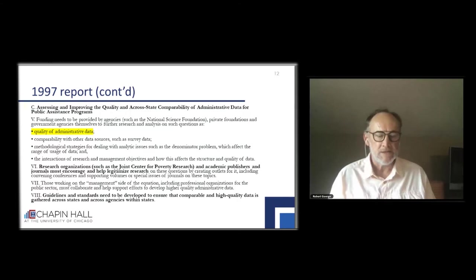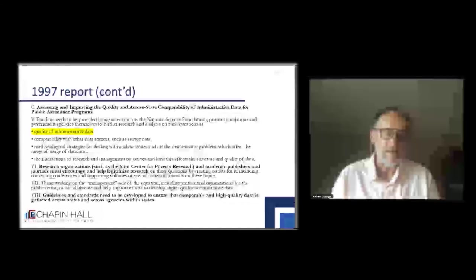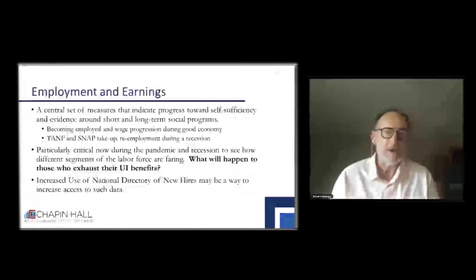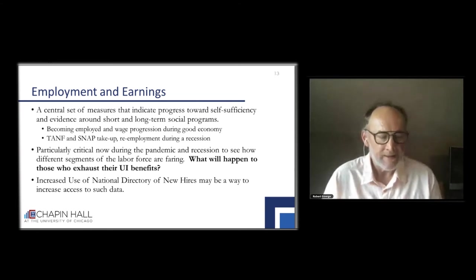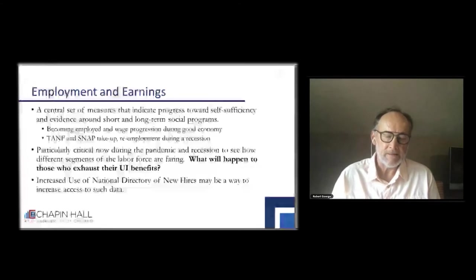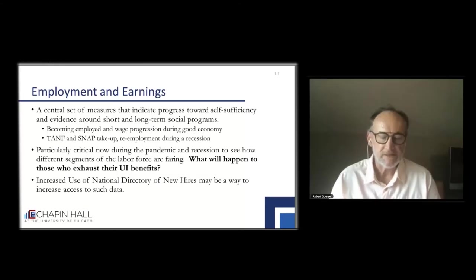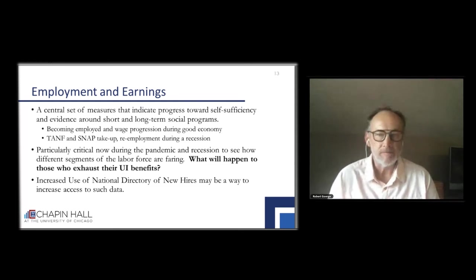All this background that happened in the last century really speaks to the data we need to bring together to address better measurement of economic mobility and family self-sufficiency. In the 21st century, there's been more of a focus on employment and earnings. In part, this is due to welfare reform, where we moved away from cash assistance and made work for low-income families a priority. So we're still actively working on better measures — multidimensional measures indicating progress towards self-sufficiency and economic mobility — and working towards evidence around short- and long-term effectiveness of social programs.